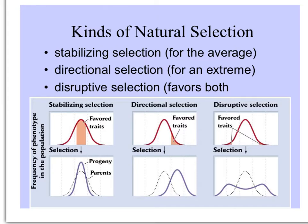Directional selection favors one extreme or the other. If at one end the fitness of those individuals is better, selection will move that curve — the distribution of phenotypes — to the right.